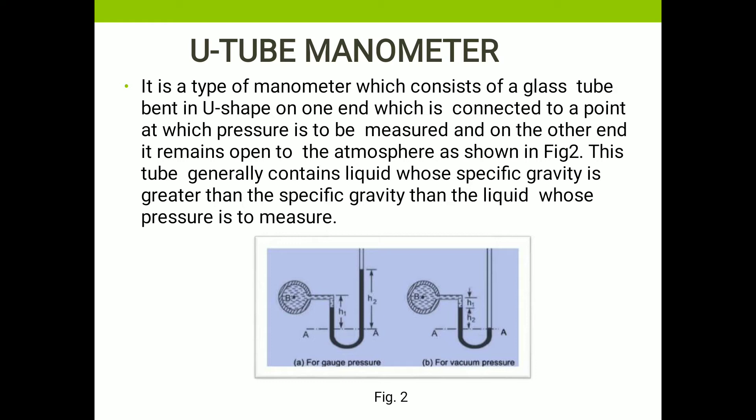U-tube manometer — it is a type of manometer which consists of a glass tube bent in the U-shape. One end is connected to the point at which pressure is to be measured, and the other end remains open to the atmosphere, as shown in figure number two. This tube generally contains a liquid whose specific gravity is greater than that of the liquid whose pressure is to be measured.